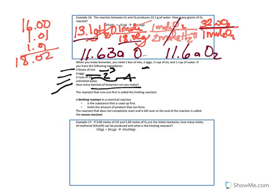The point is that to determine how many actual batches you can make, you must look at all your ingredients. Just because you have three boxes of mix doesn't mean you can make three batches. The ingredient that runs out first — like the eggs here — is what we call the limiting reactant. It is the reactant in a reaction that we run out of first, limiting what you can make.